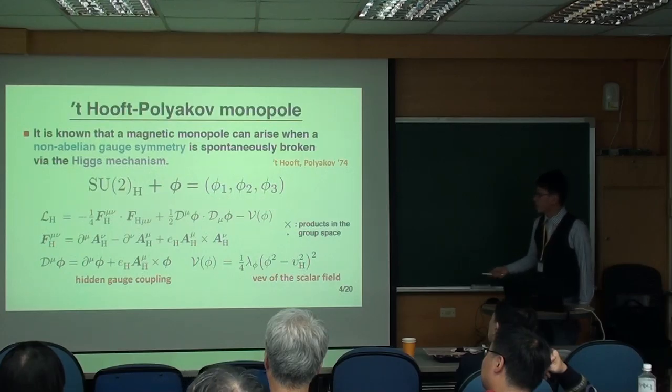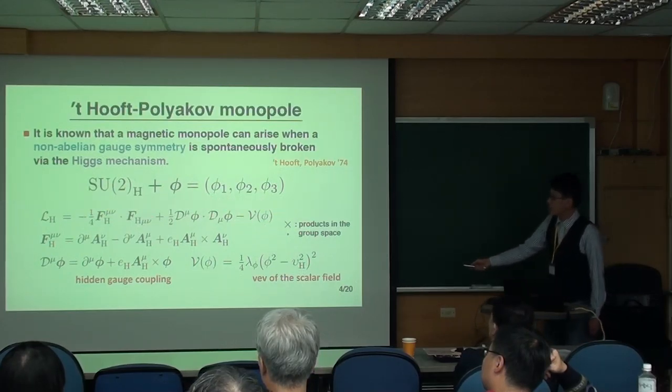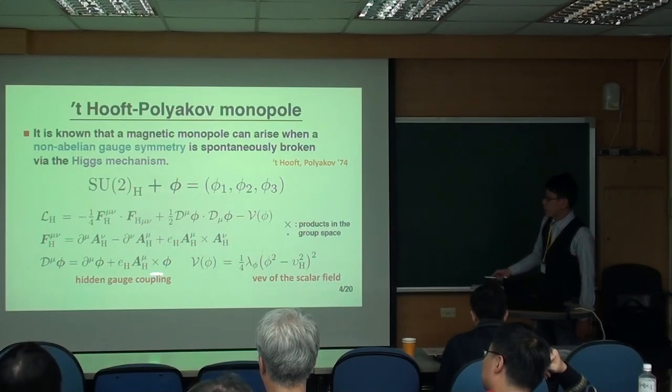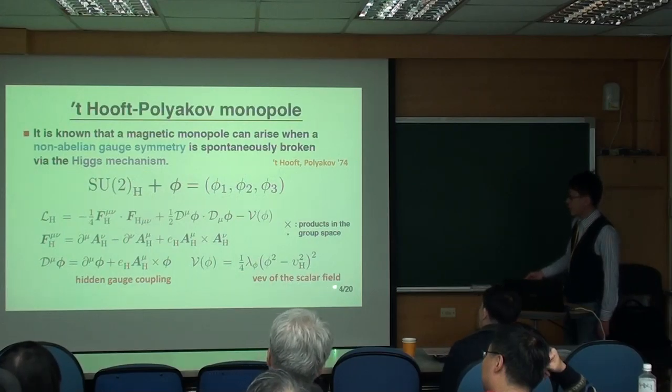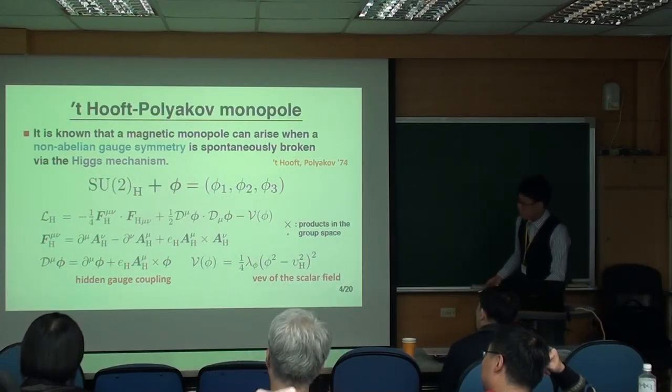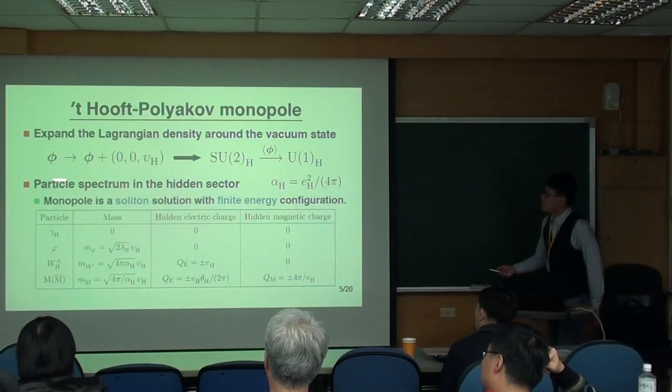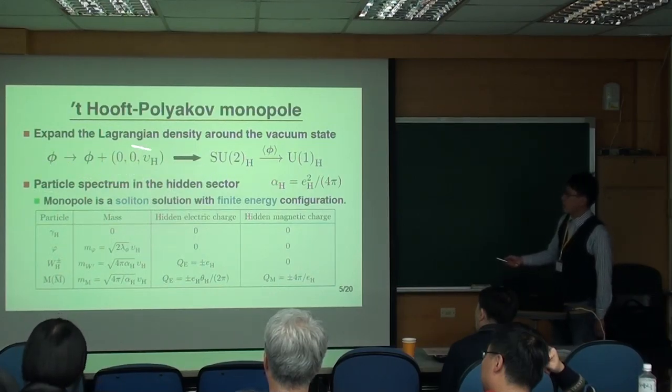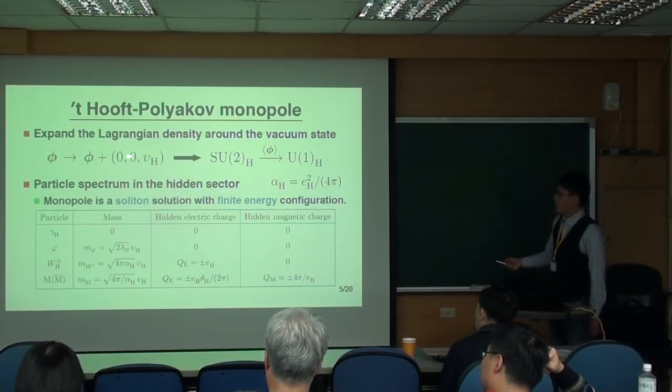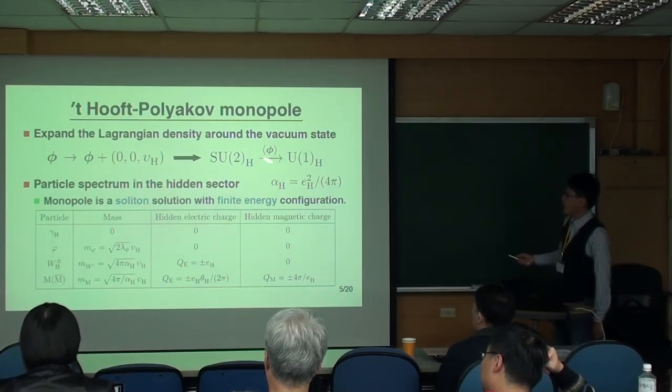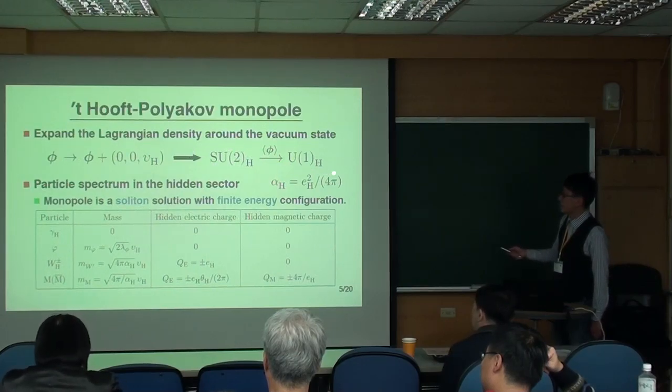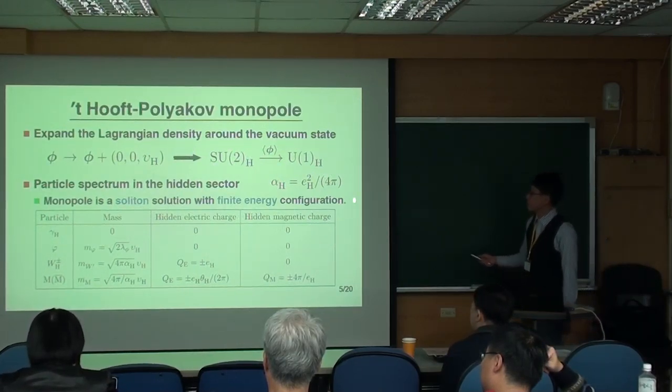What we consider is this model. We basically introduce this SU(2) gauge field symmetry, plus an isovector scalar which has three components. This is the Lagrangian of this model. Here, g_h is the hidden gauge coupling, and v_phi is the VEV of the scalar field.